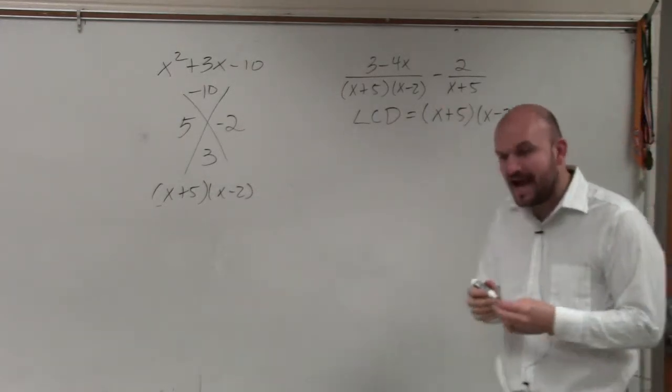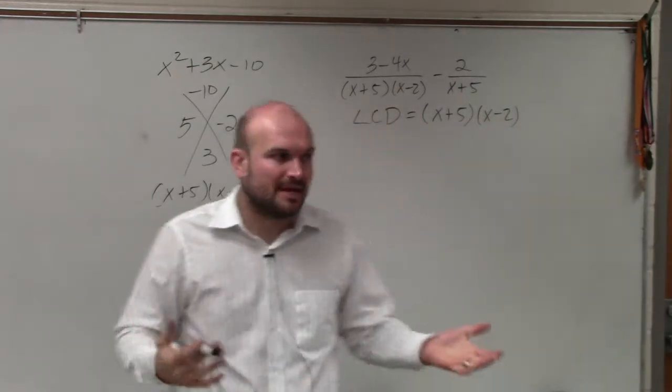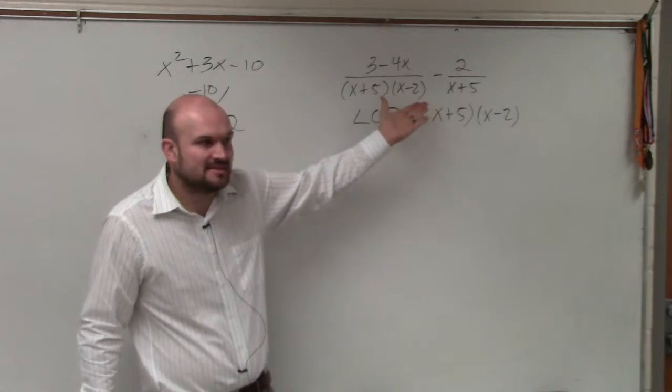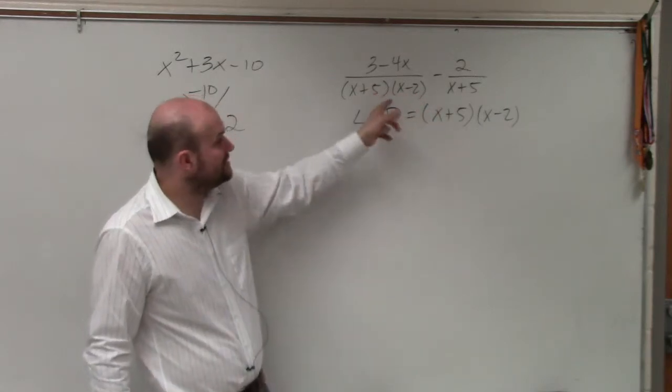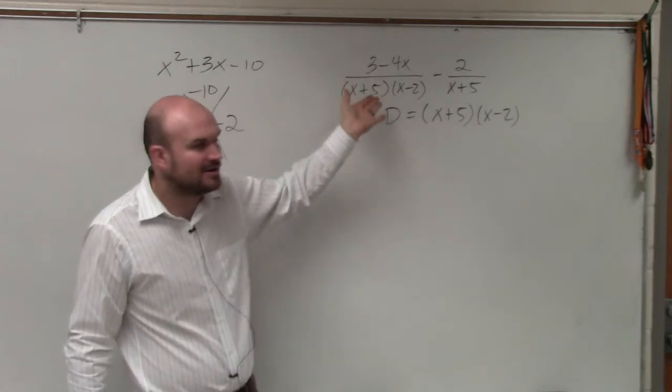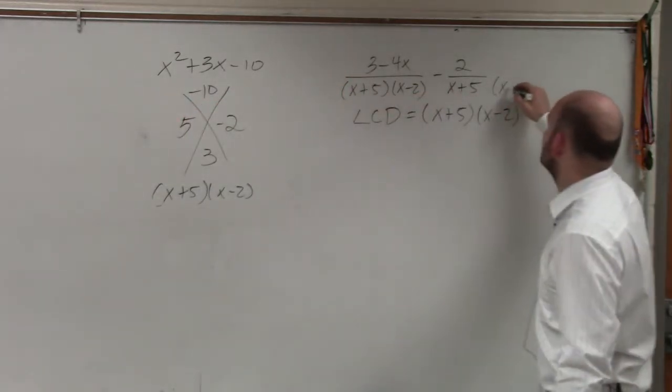What's nice about that is when I find common denominators, I don't have to do anything to this one because it already has the common denominator. Otherwise, you'd be multiplying trinomials and binomials, and it gets crazy. So over here, we'll just multiply by (x - 2).